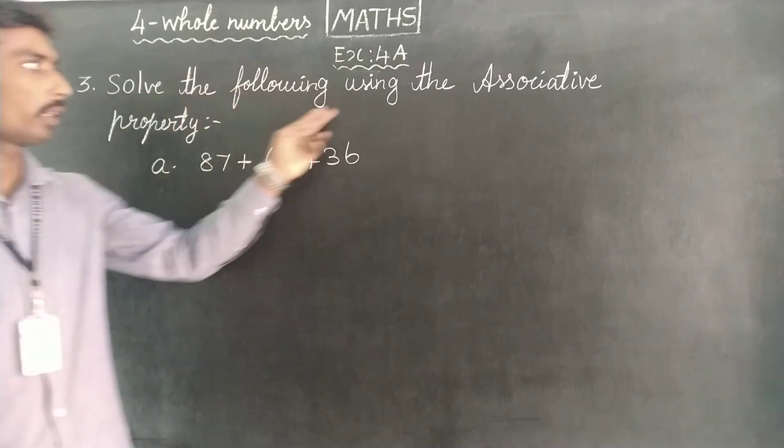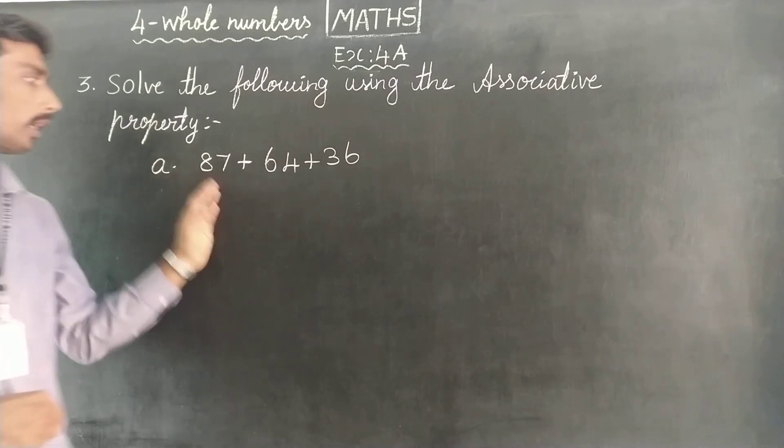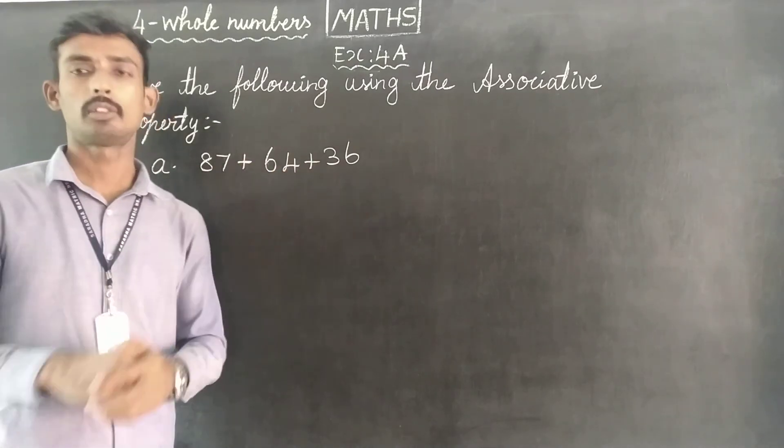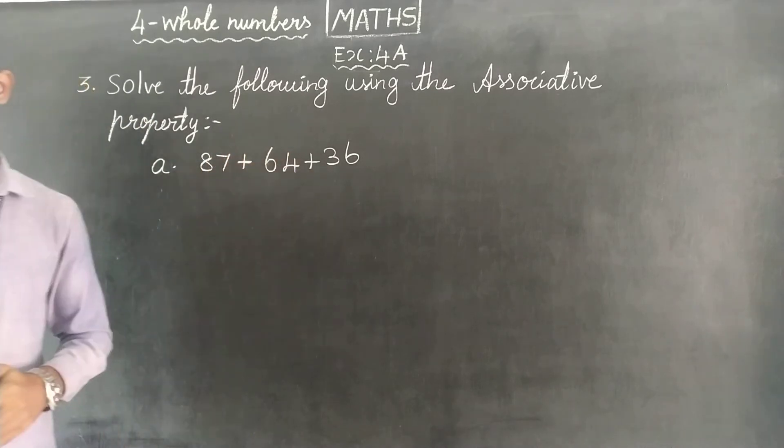Third sum, solve the following using the associative property. A sum, 87 plus 64 plus 36, three numbers. This is our associative property answer.